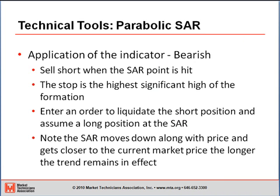How do we use the indicator when it's bearish? That will be the exact opposite of when it is bullish. We sell short when the stop-and-reverse point is hit. The stop-loss will be the highest significant high of the formation, and again we enter an order to both liquidate the short position and assume a long position via two stop-loss orders. Note that the stop-loss point then moves down along with price, and will get closer to the current market price the longer the downtrend remains in effect.